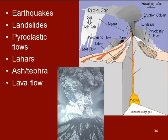Some of the hazards associated with volcanoes, especially Cascade volcanoes, are earthquakes, landslides, pyroclastic flows, lahars, ash or tephra, and lava flows.